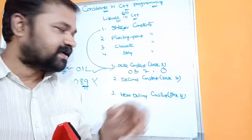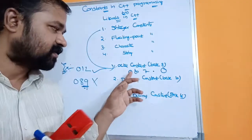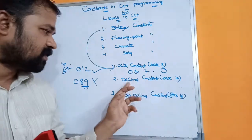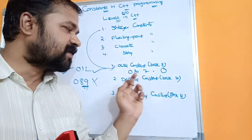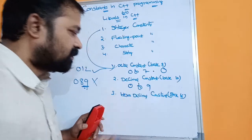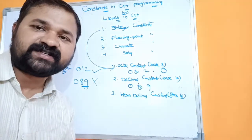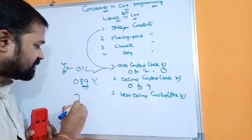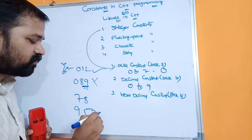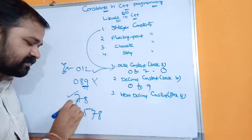So an octal constant has digits from 0 to 7 and always begins with 0. Now let us see about decimal constants. A decimal constant contains a combination of digits from 0 to 9. For example, 78 and 95 are both decimal constants because they only use digits from 0 to 9.